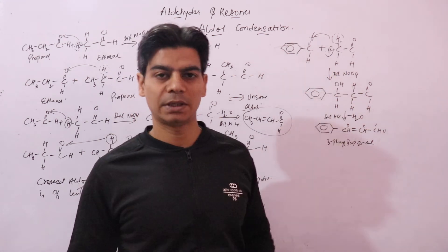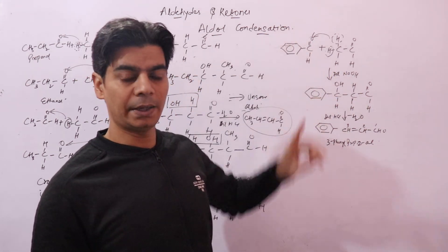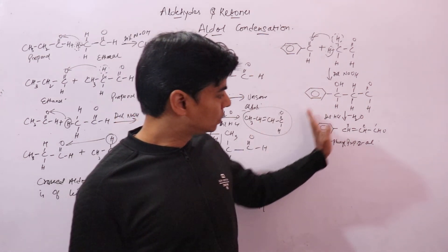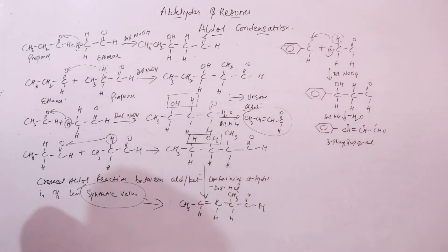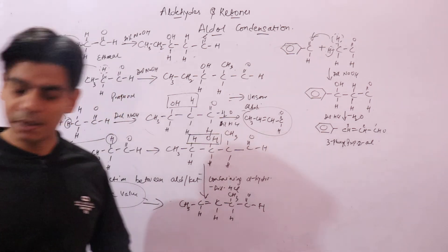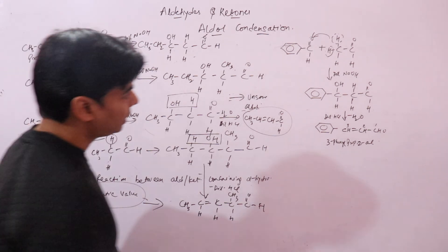Now let's take one more example: the reaction between benzaldehyde and acetophenone. Acetophenone contains alpha hydrogen, whereas benzaldehyde does not contain alpha hydrogen. Acetophenone has a CH₃ group attached to the carbonyl carbon, and the hydrogens on that CH₃ are the alpha hydrogens.